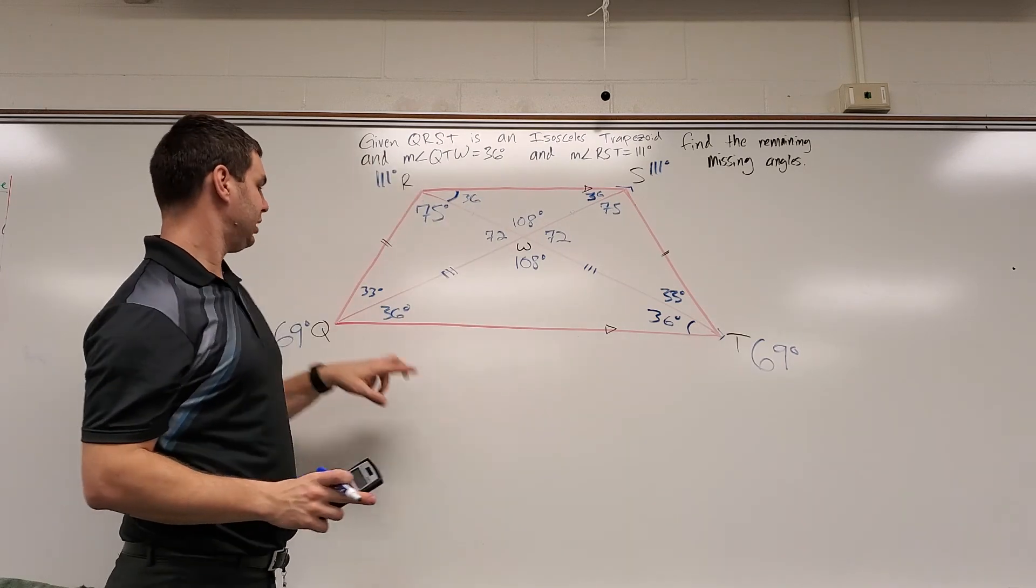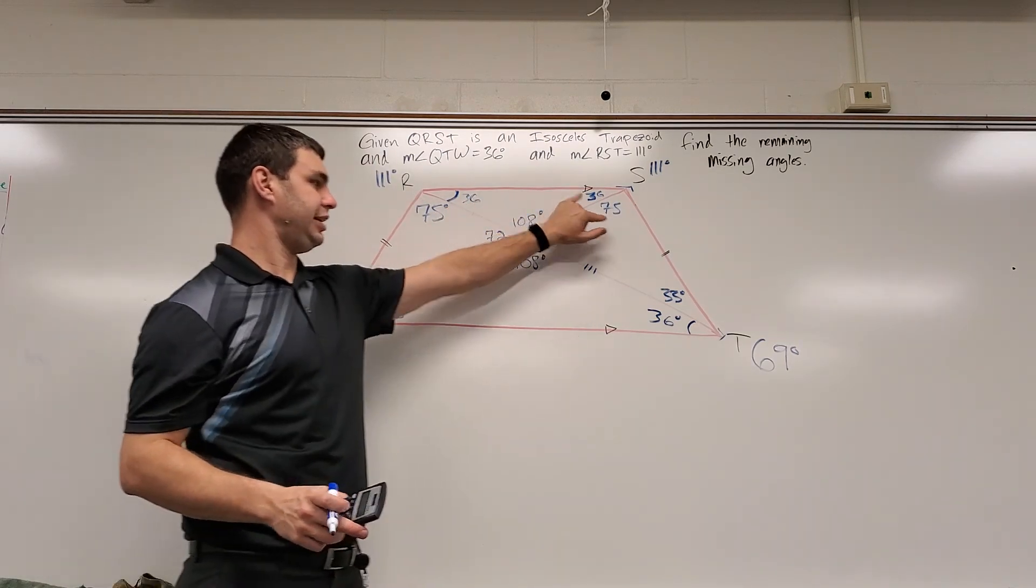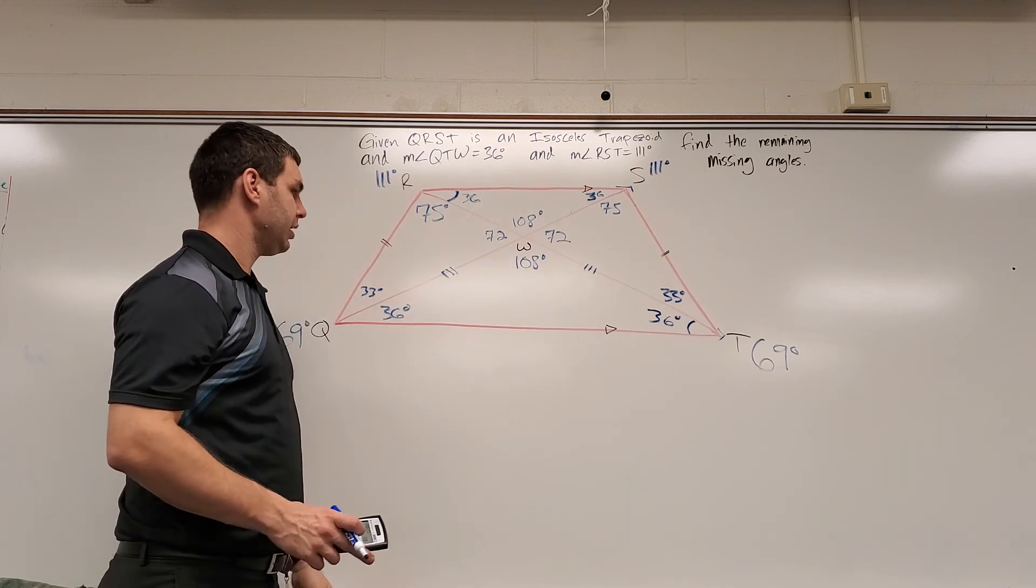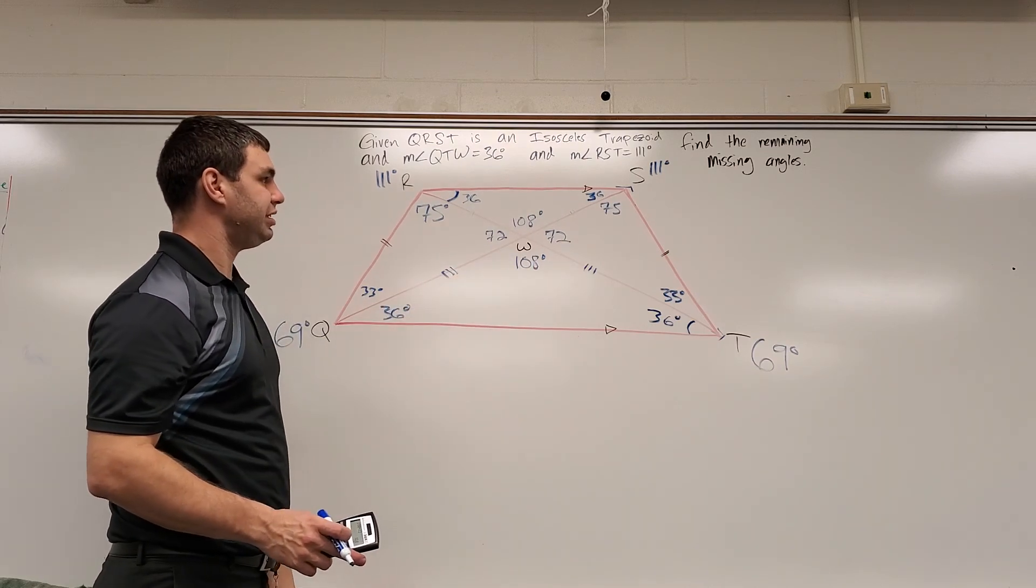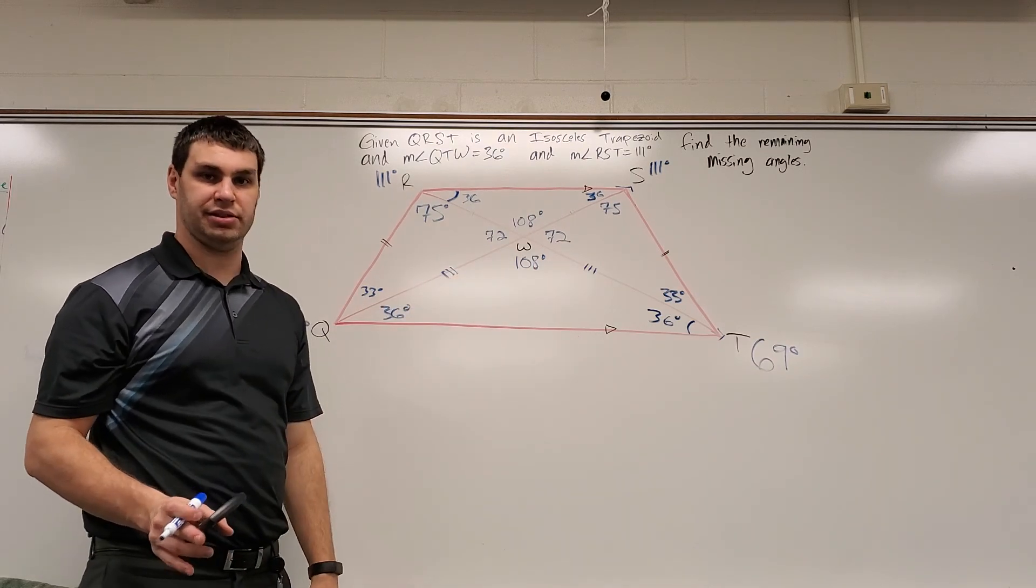We have the outside four. We have the two on the insides on each corner, and then our four in the middle. And that is all the missing angles in this isosceles trapezoid.